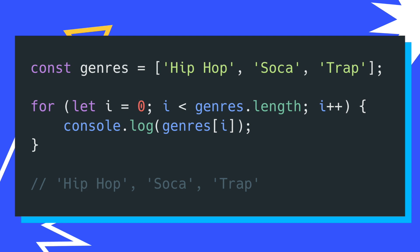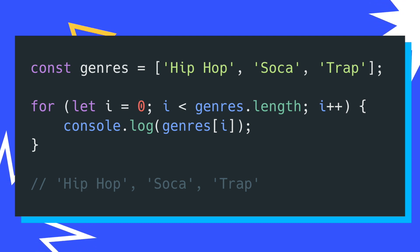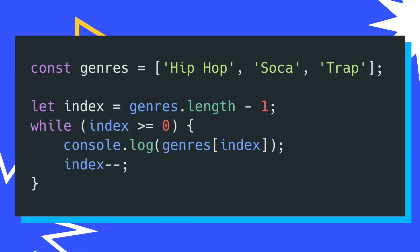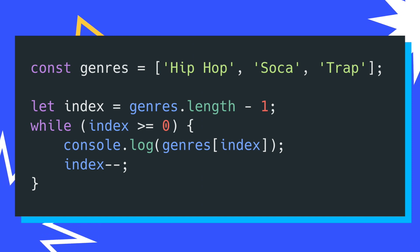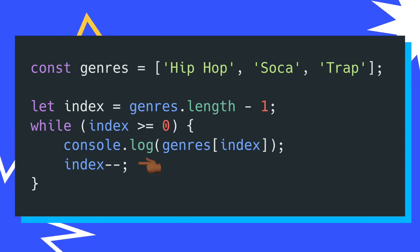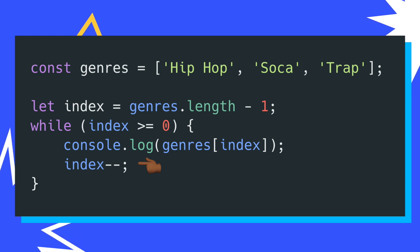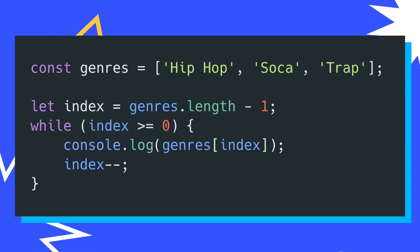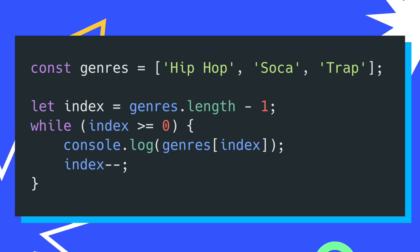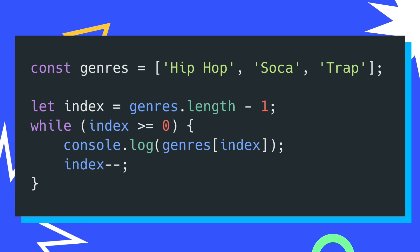We can see something similar happening with the use of the decrement operator with a while loop. In this code block, you can see that I'm taking advantage of the decrement operator to step through my genres array backwards while using a while loop. What's happening in both cases is that I'm altering the actual value of my i and index variables in place, respectively.